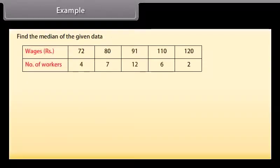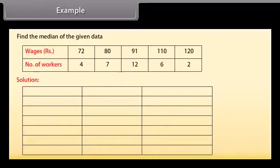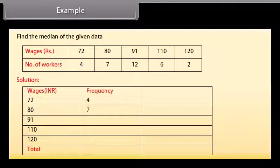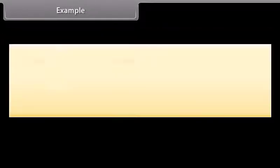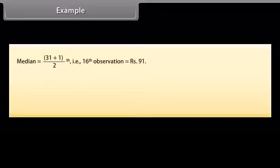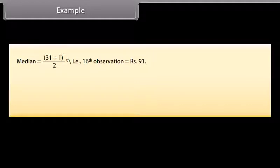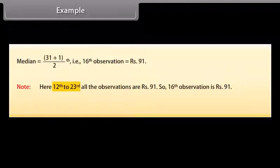Find the median of the given data. Solution: The first column has the wages, the second has the frequencies. The sum of frequencies is 31. The third column has the cumulative frequency found by adding the previous frequency to the current. The median is the (31+1)/2 = 16th observation, which equals ₹91. Since the 12th to 23rd observations are all ₹91, the 16th observation is ₹91.